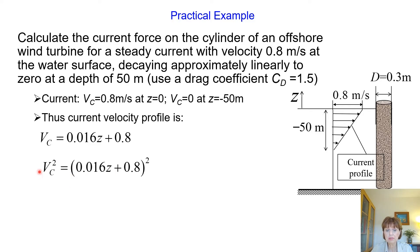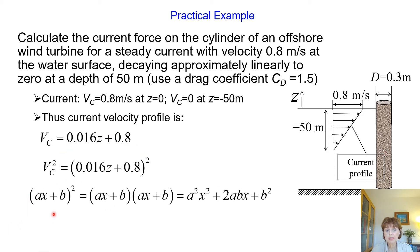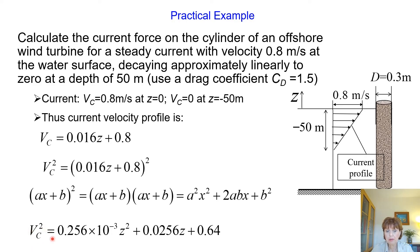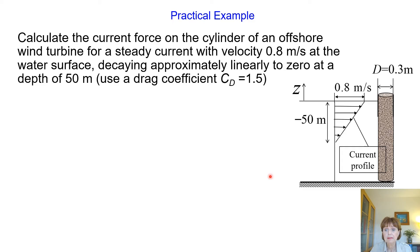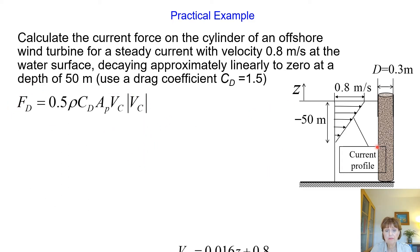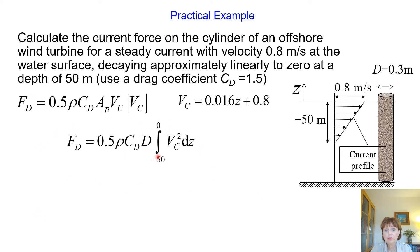Because for drag force we need velocity squared, we expand the expression. Taking (0.016·Z + 0.8)² using the standard form (aZ + b)², we represent the current velocity squared as a polynomial: Vc² = (coefficient)·Z² + (coefficient)·Z + 0.64. To calculate the C-current drag force, we substitute this expression into the general drag force equation: F_D = 0.5 · ρ · C_D · D · ∫Vc² dZ, integrating from 0 to −50.